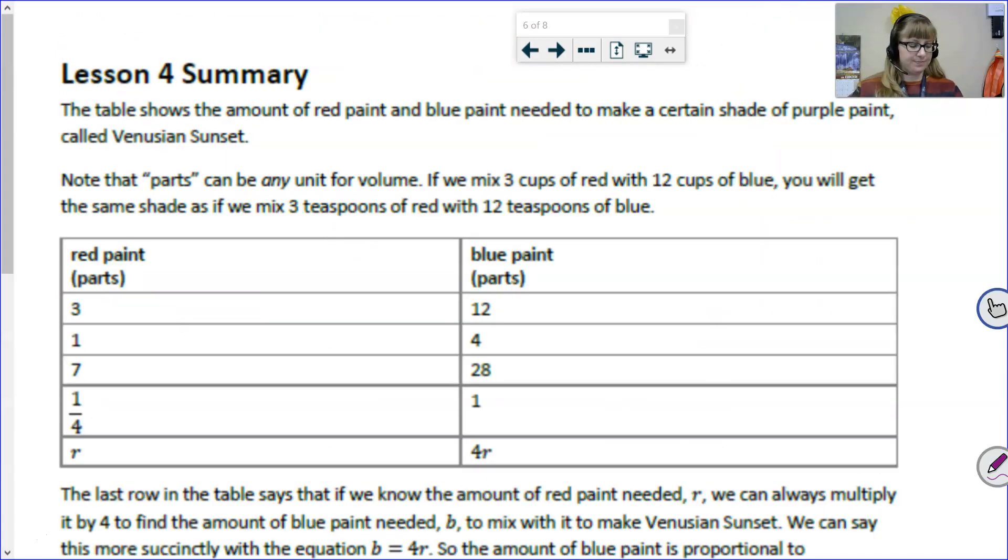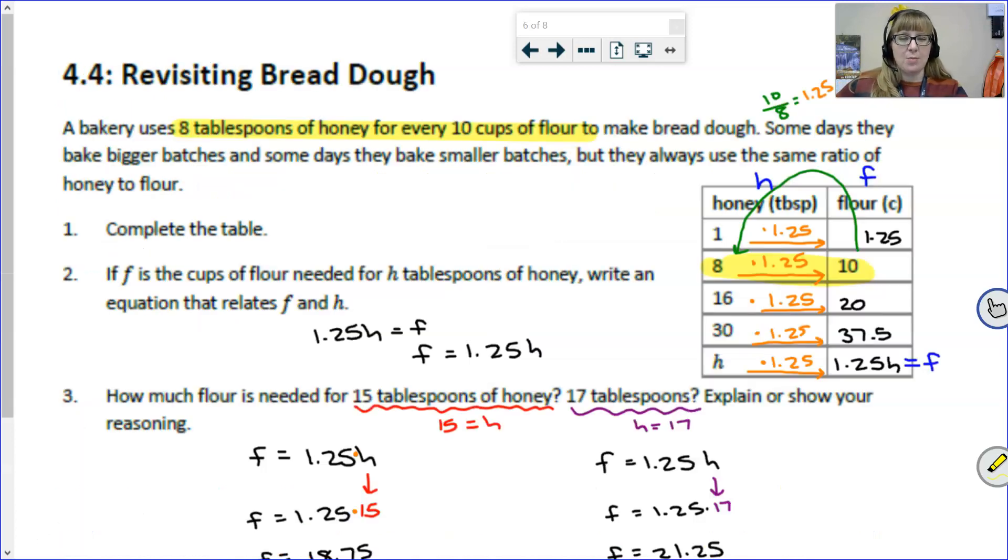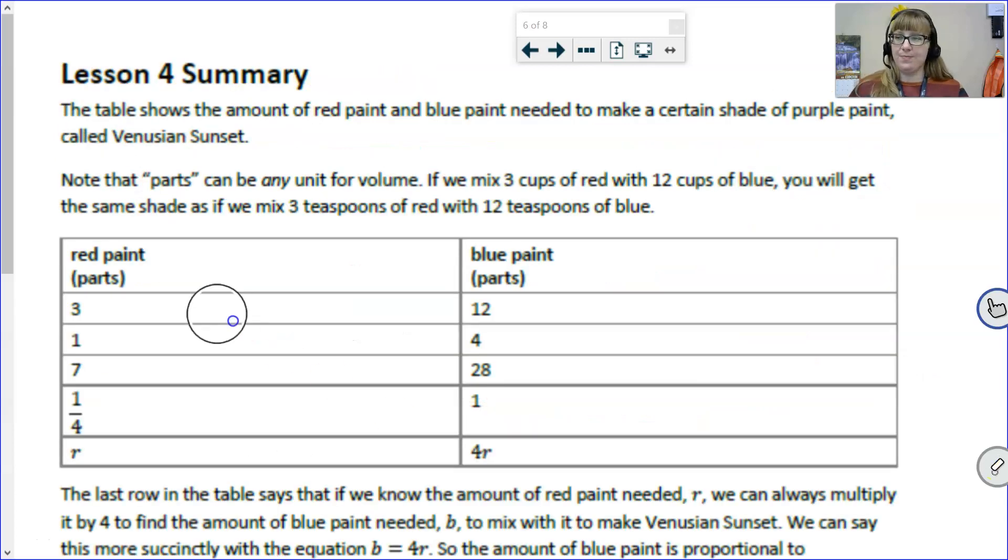And now, it's time to summarize. This table shows the amount of red paint and blue paint needed to make a certain shade of purple paint called Venusian sunset. Here is something interesting about this table. Let's compare it to what we saw before. Here, we're measuring honey in tablespoons, and here, we're measuring flour in cups. This is a little bit different. We're using the unit of measure parts. And parts is actually really helpful because it can be any unit for volume. For example, if I'm making a really big batch of paint, I would probably be using cups. So, 3 cups and 12 cups.